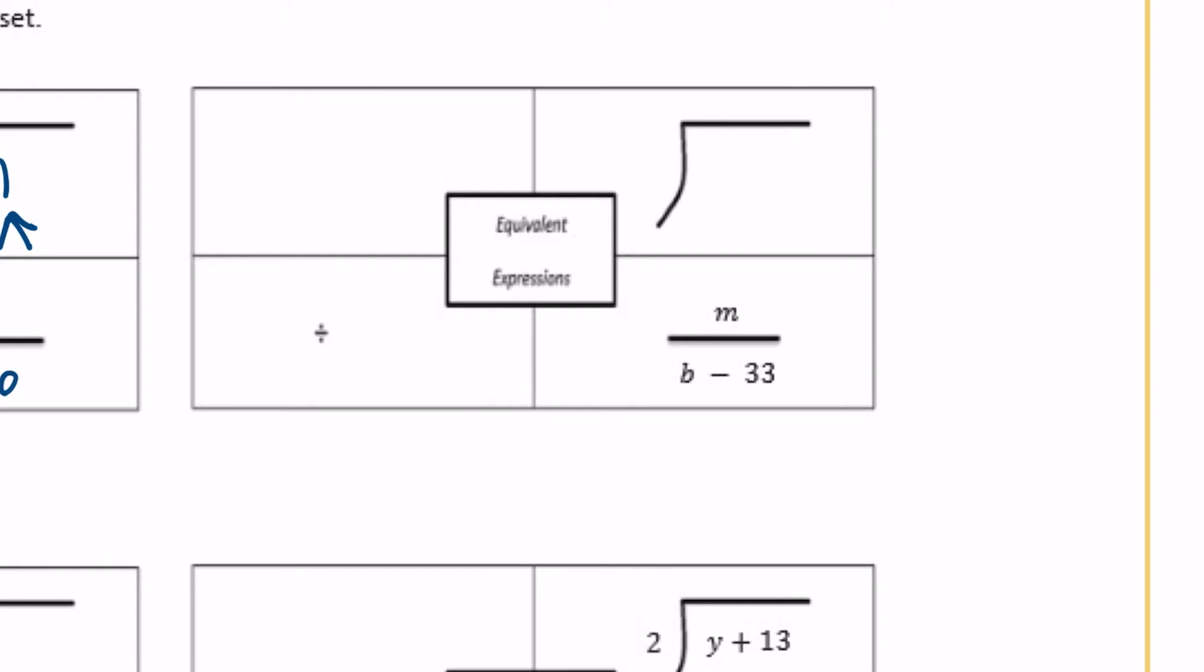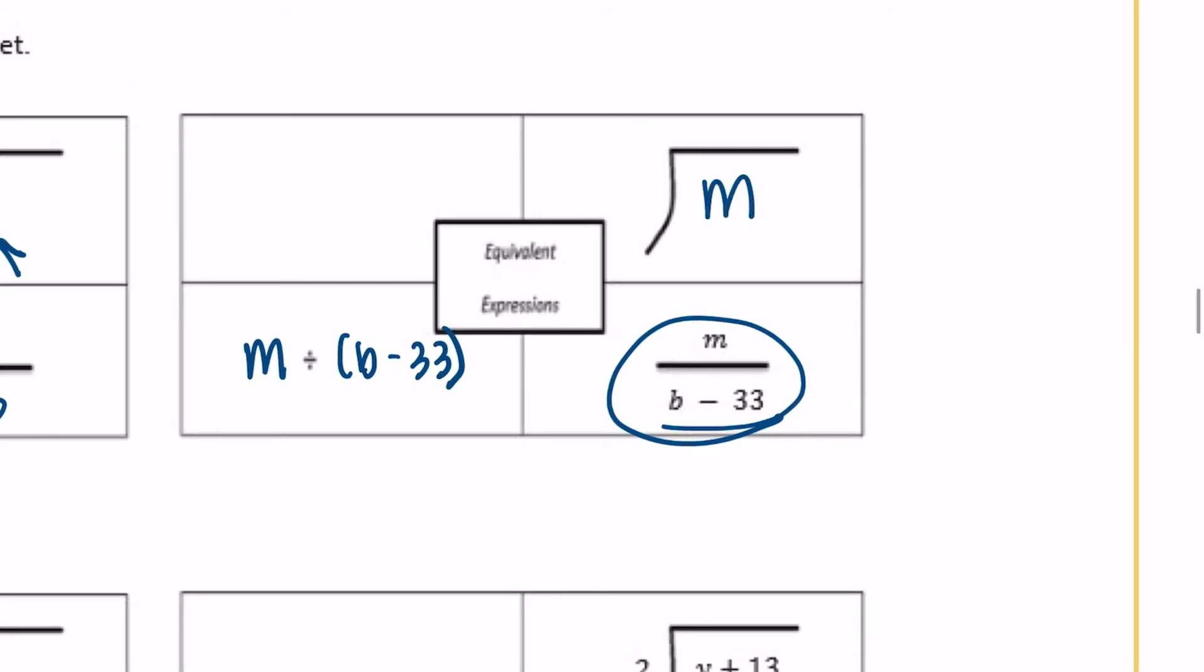The next one, they've given us here m divided by b minus 33. So we could also write it as m divided by, and I'm going to put b minus 33 in parentheses so we know they stay together. Or m divided by b minus 33. Put those in parentheses too. Or we could say m divided by b minus 33.